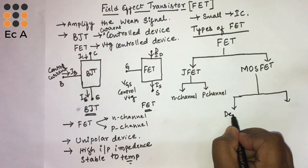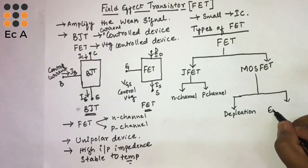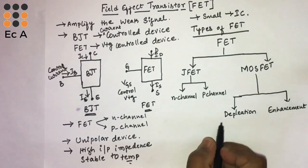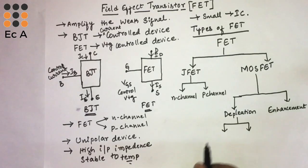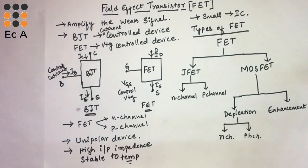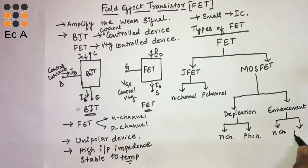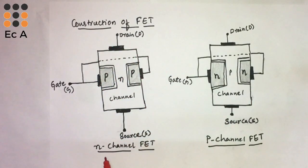MOSFET is classified into depletion type and enhancement type. The depletion type can further be classified as N-channel and P-channel, and similarly the enhancement type can be classified as N-channel and P-channel MOSFET.